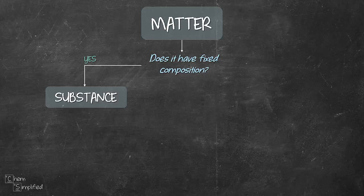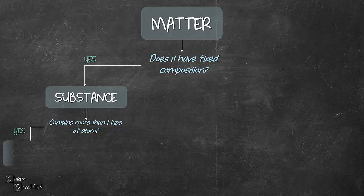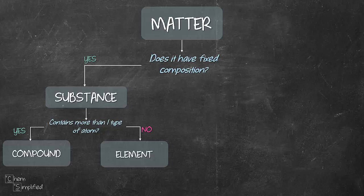If yes, then that matter is a substance. Then we can further classify it by asking another question which is, does it contain more than one type of atom? So the key point here is that we are asking whether it has more than one type, not number of atom. If it has more than one type of atom, answer is yes, then it should be classified as compound. Otherwise, if it only has one type of atom, it should be classified as element.